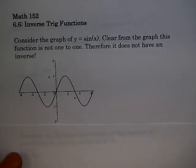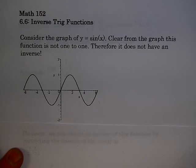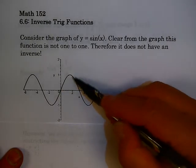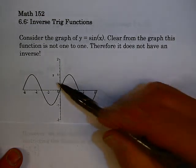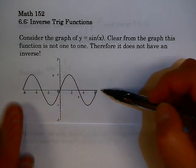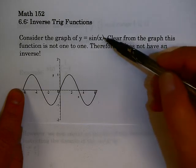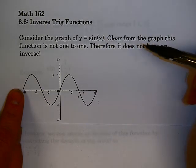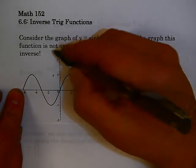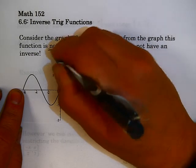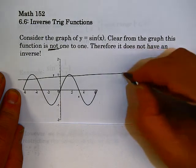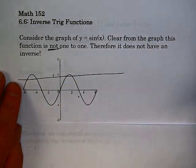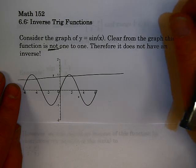Here's the graph of sine. You should recognize this. The graph of sine starts at 0, goes up to 1, comes back down to 0, down to negative 1, and it keeps repeating forever. I've drawn from minus 2π to 2π the graph of sine of x. It's really clear from this graph that this function is not 1-to-1 — it clearly does not pass the horizontal line test. It crosses a horizontal line many times, so therefore it doesn't have an inverse.